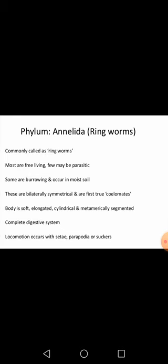The animals of Phylum Annelida are also called ringworms. They have bilateral symmetry, meaning we can cut their body into two equal halves by a single plane. Annelida are the first true coelomates. Until now we had seen Porifera, Coelenterata, Ctenophora, and Platyhelminthes — all were acoelomate, and Aschelminthes were pseudocoelomate. Annelida are the first phylum with true coelomate animals.